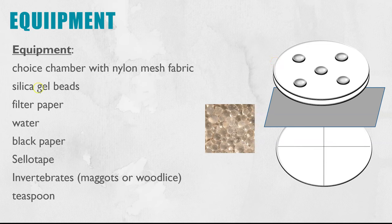To create a dry chamber we would add silica gel beads and these absorb moisture in the air. To create a damp or humid chamber we would insert filter paper which is soaked in water. To create a dark chamber you would cover the plastic in black paper and sellotape it down. We need the invertebrates themselves and so that you don't touch them use a teaspoon to collect them and then insert them in through the hole.